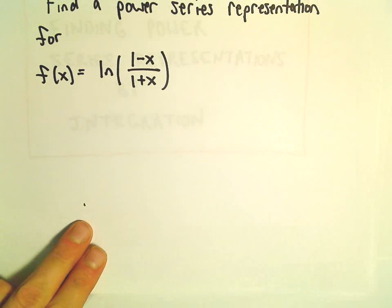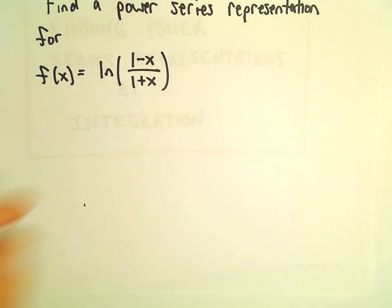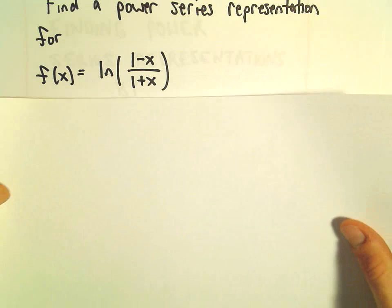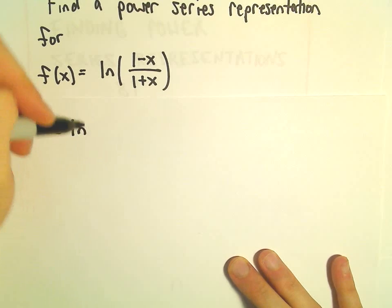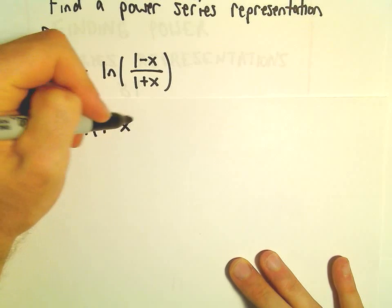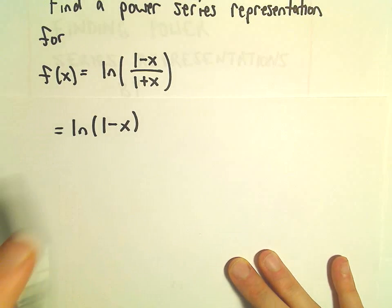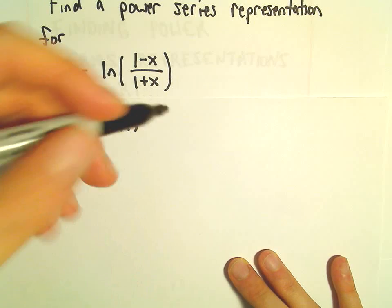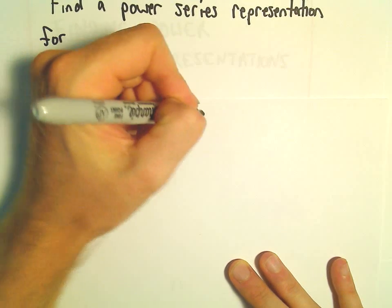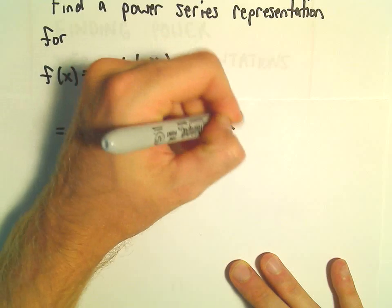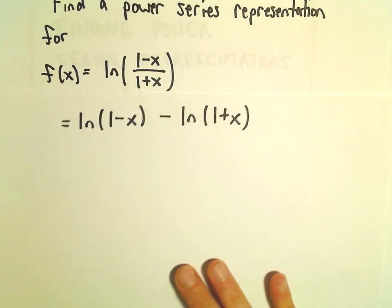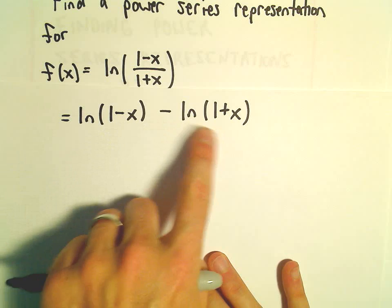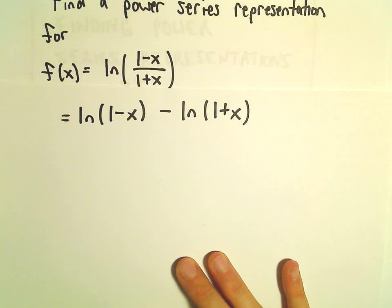Here we're going to find a power series representation for the function the natural logarithm of (1 minus x) over (1 plus x). The first thing I'm going to do is rewrite this as the natural logarithm of 1 minus x, minus the natural logarithm of 1 plus x, using properties of logarithms. What I'm going to try to do is find a series representation for each one of these.